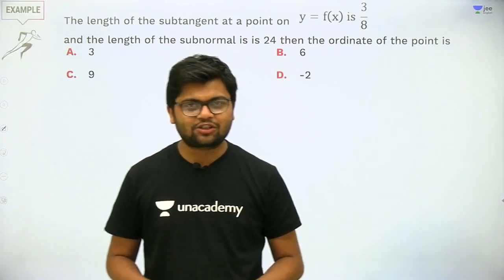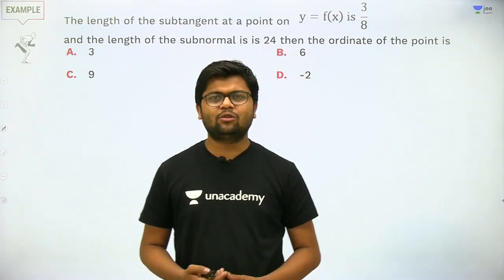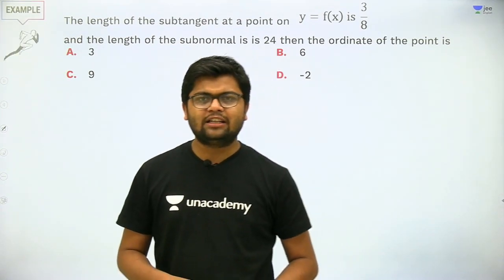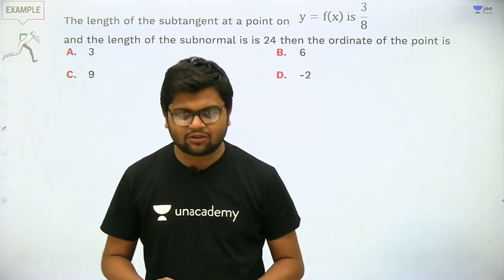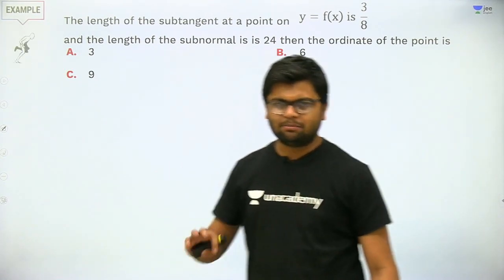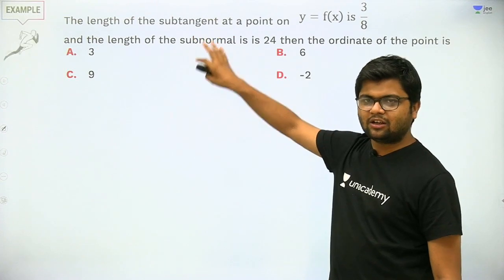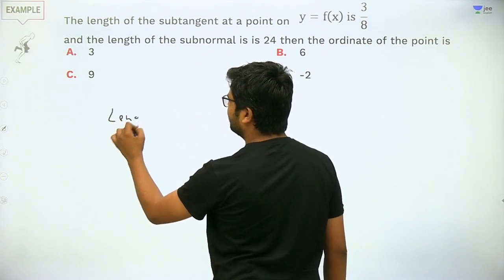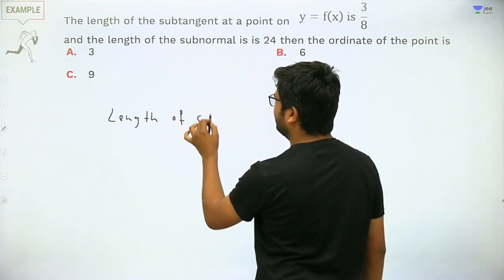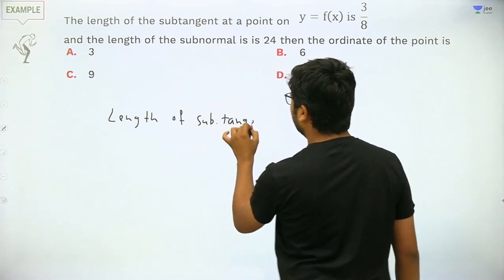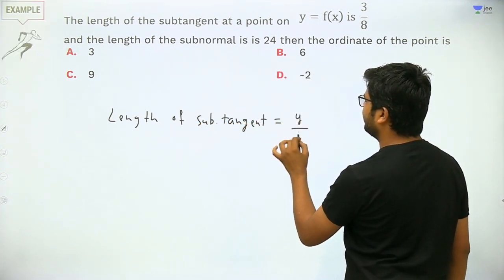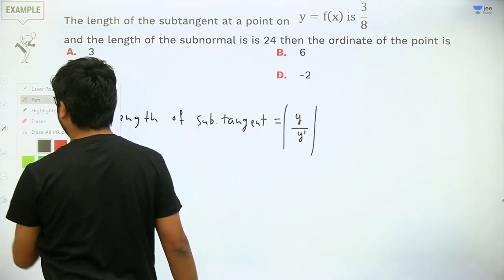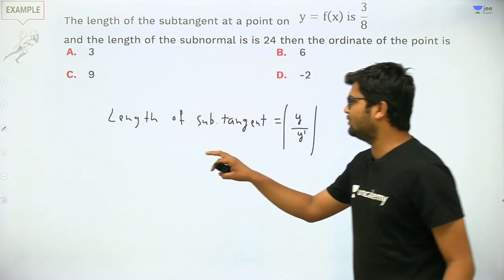First question: the length of the sub-tangent at a point on y = f(x) is 3/8, and the length of the sub-normal is 24. Find the ordinate of the point. The length of sub-tangent equals |y / y'|, since y' can be negative but length cannot. Length of sub-normal equals |y · y'|.